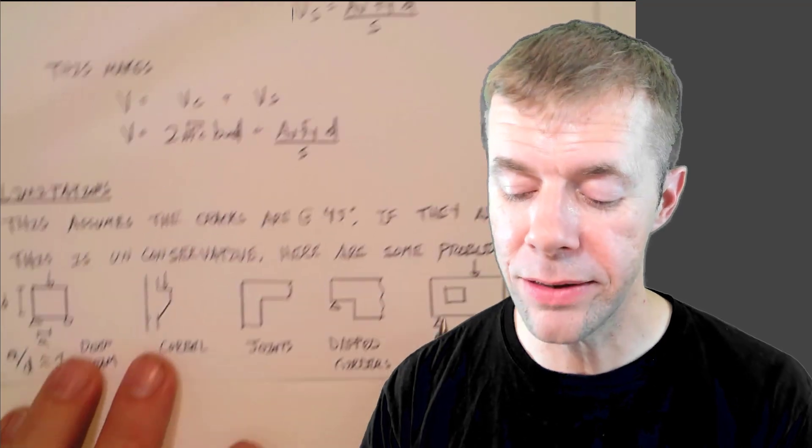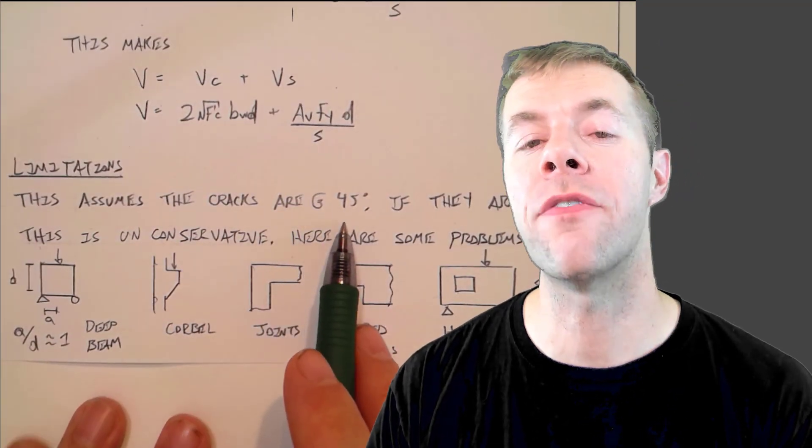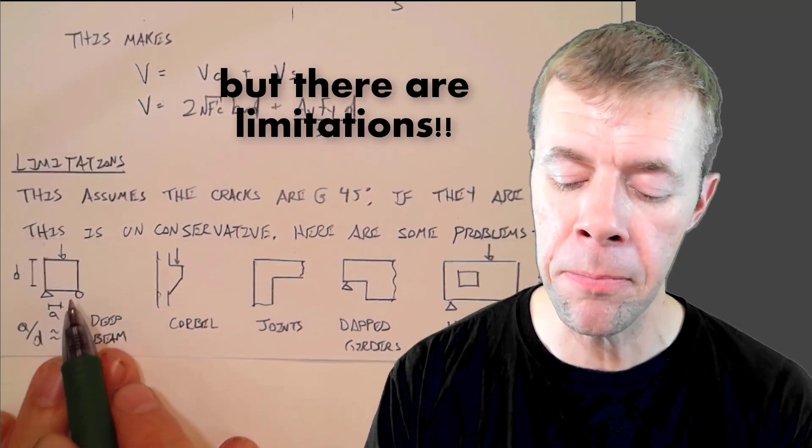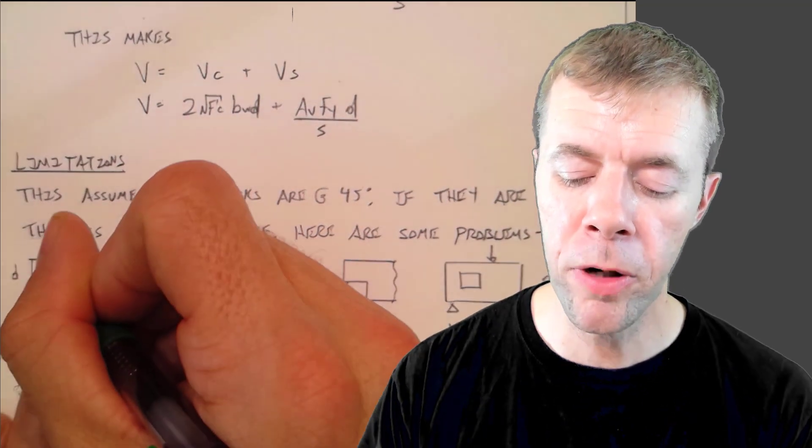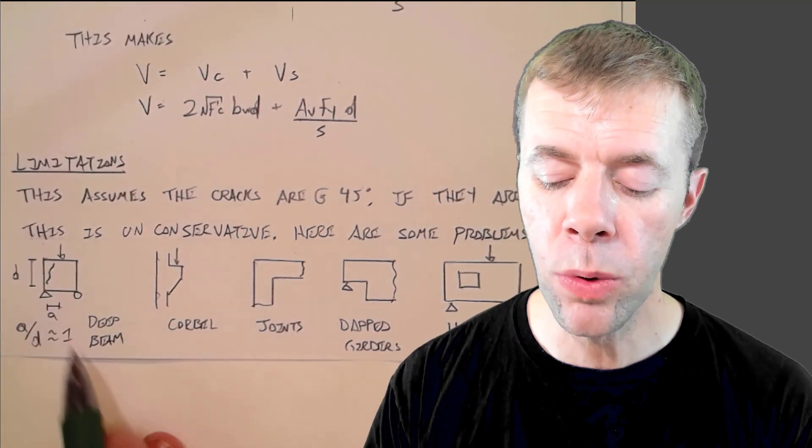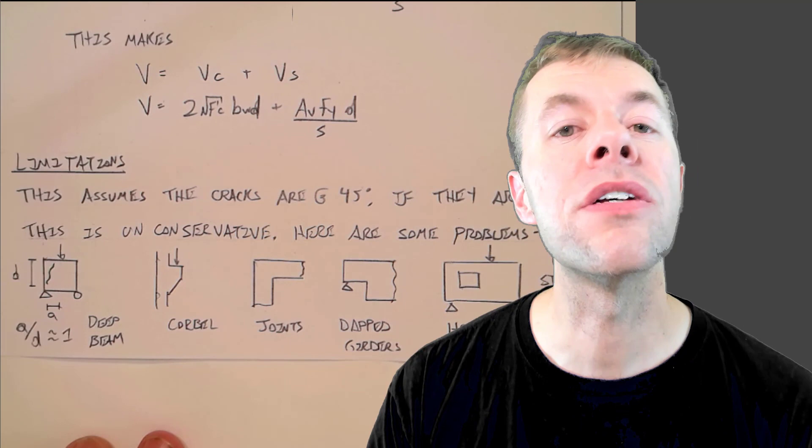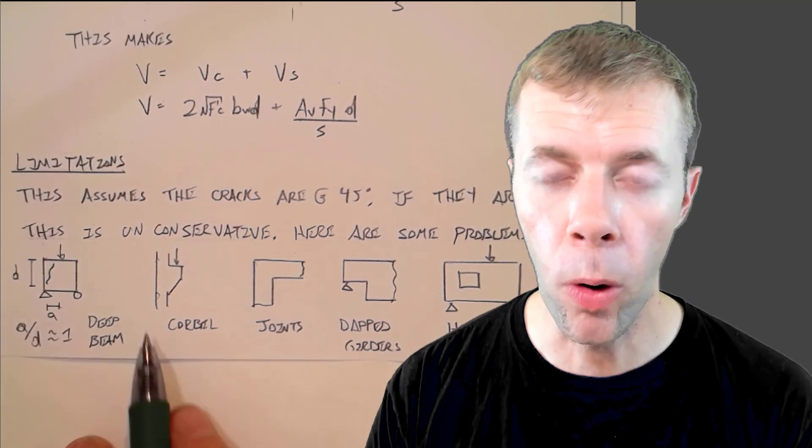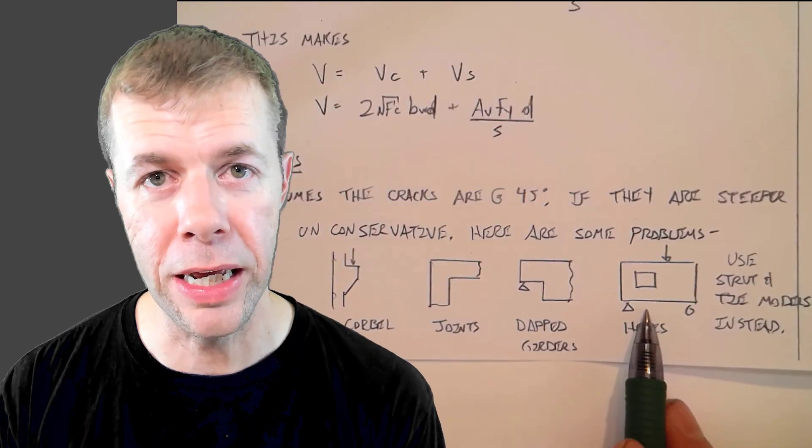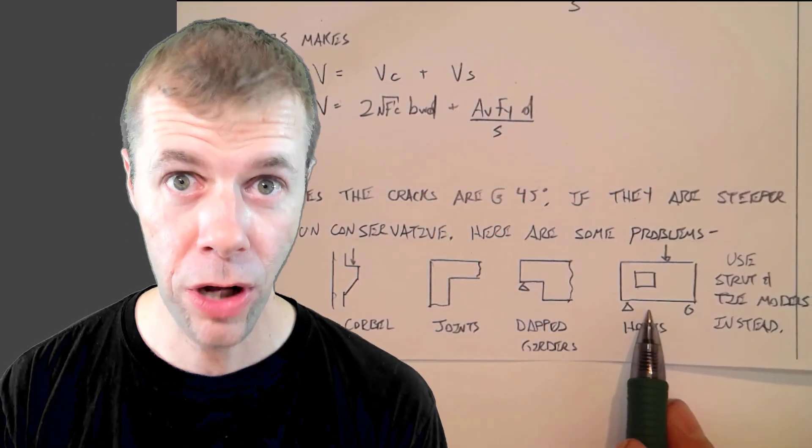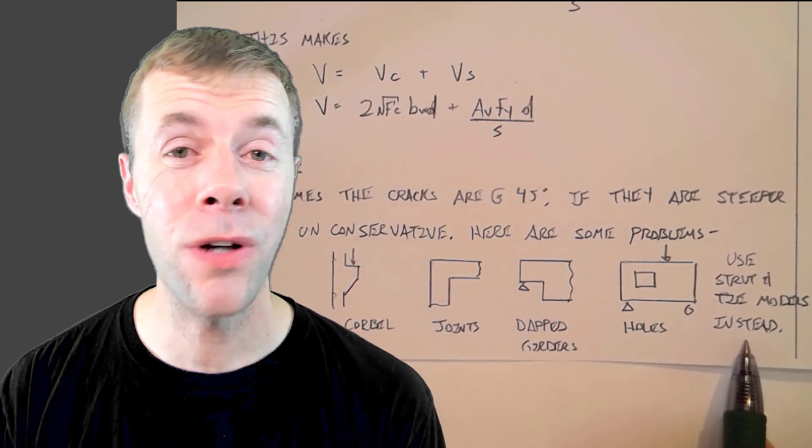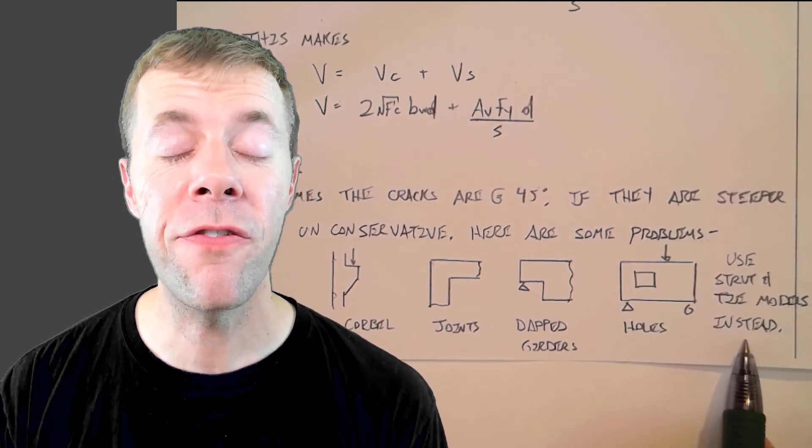Now this works great when cracks can be assumed to be close to 45 degrees. But if they're steeper than that, for example, if I have a deep beam where my crack would be much, much, much larger than that, that's when we have something called an A over D ratio of about one. This doesn't work. If I have a corbel or a joint or a deep girder or a girder with a hole in it, this doesn't work. And we need something else called a strut and tie model. And I'm not going to talk about it in this video. Maybe in the future.